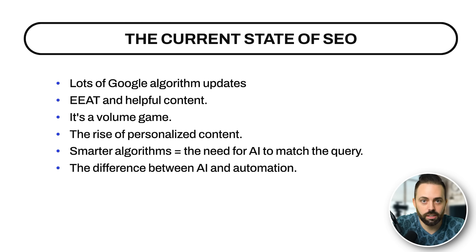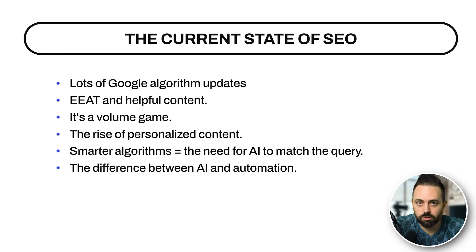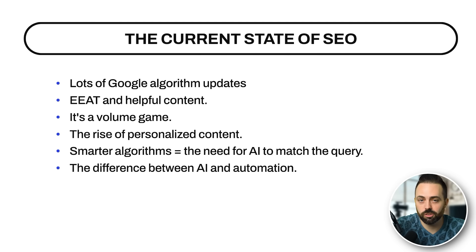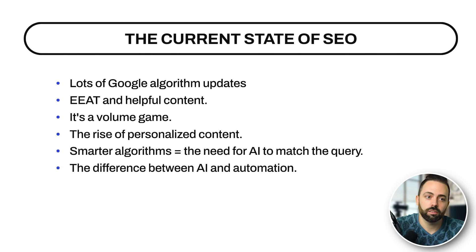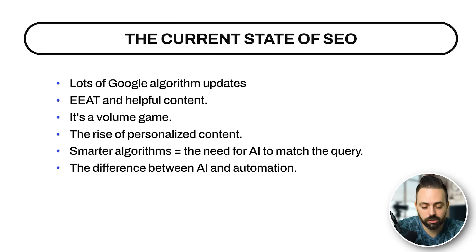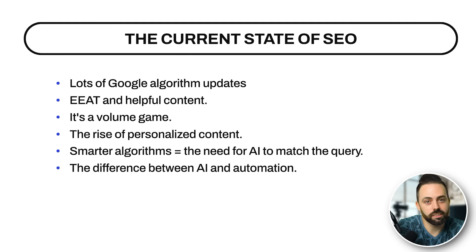Today it's really a volume game. Big media sites are publishing faster, which means we have to publish faster too, so we use AI tools to help. There's also more personalized content — like in Google News Feed or your YouTube feed — based on past search history you can get slightly different top-10 results. We are entering a world with AI and personalization where personalized search results are becoming more and more of a thing.